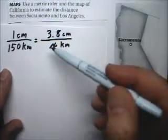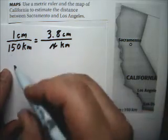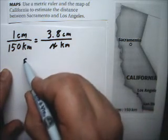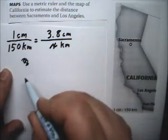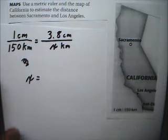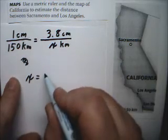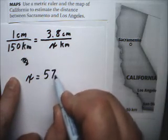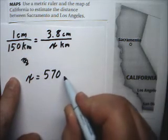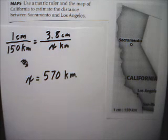Cross-multiplying, this works out very nicely. 1 times X is just X. So to get my answer, I just have to multiply 150 times 3.8, and that's 570. So the answer is 570 kilometers.